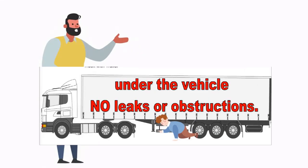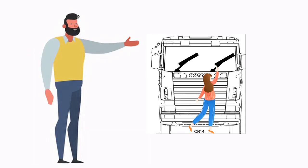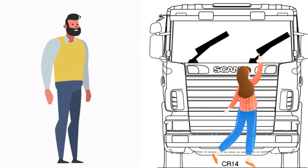First, you will look under the vehicle for any leaks or obstructions. Go to the front and pull the wiper away from the windshield, then climb into the vehicle. Now you will start with the inside inspection.